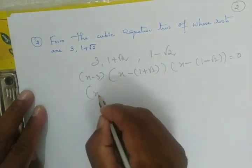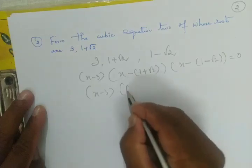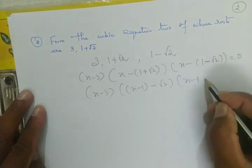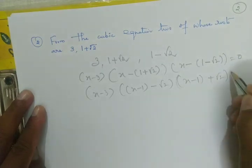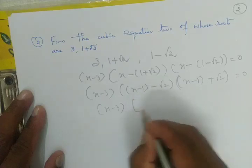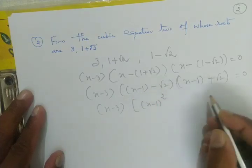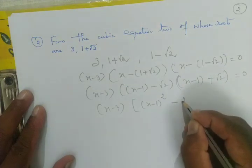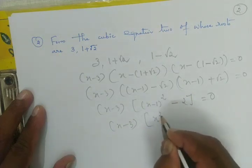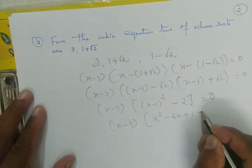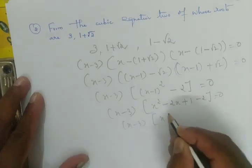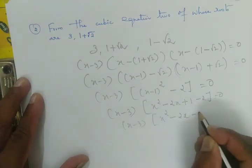Now we multiply x-(1+√2) and x-(1-√2): this is in the form (a-b)(a+b) = a²-b², giving (x-1)² - (√2)² = x² - 2x + 1 - 2 = x² - 2x - 1. So we have x-3 multiplied by x²-2x-1 equal to 0.